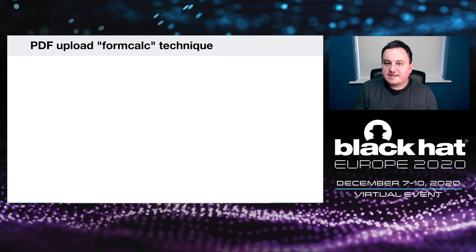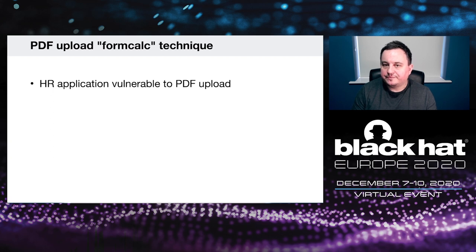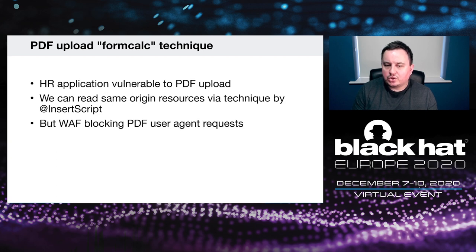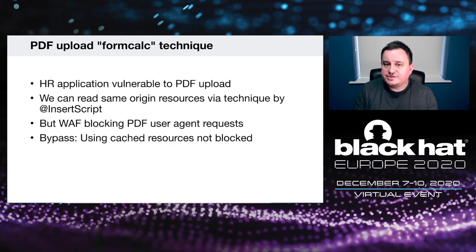While testing various PDF generation software and sites, I came across an HR application vulnerable to PDF upload. I could use InsertScript's technique to read same-origin resources, which was really cool. But the WAF was blocking the PDF user agent so my attack wasn't working. Thankfully, I found a solution to bypass that by using cached resources — as long as the resource was cached, I could read it using this technique without triggering the WAF.